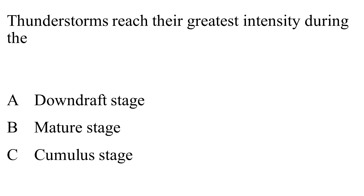Thunderstorms reach their greatest intensity during the: A. Downdraft stage. B. Mature stage. The answer is B: the mature stage.